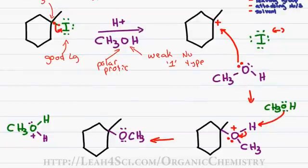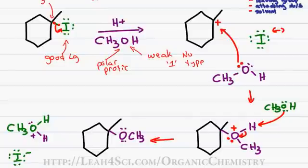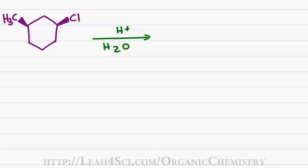We also have a protonated methanol, which is the regeneration of our acid catalyst. It appears that the final step has a net charge of plus one, but don't forget the I minus off somewhere in solution, which cancels out that positive charge — giving conservation of charge through every step of this reaction. One thing we did not look at here is the stereochemistry of the starting and ending molecule, and that's because our starting molecule is achiral.